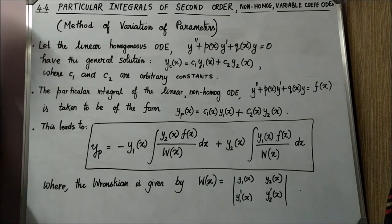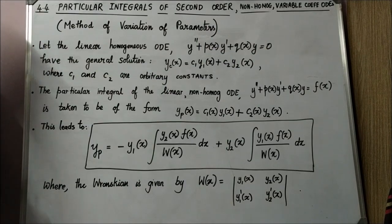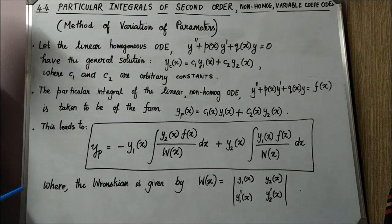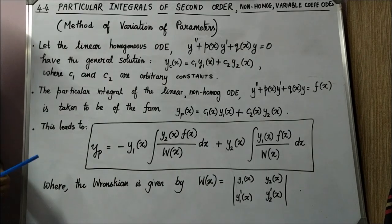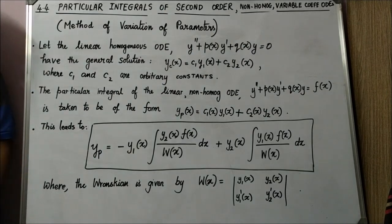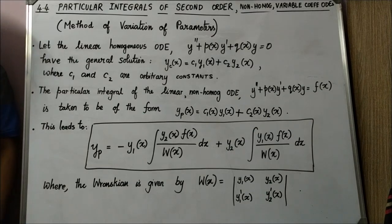Variation of parameters is not generally suggested in exams unless required — for example, when the equation is variable coefficient, such as a non-homogeneous Cauchy-Euler equation. If it is constant coefficient, use undetermined coefficients or the shortcut method instead. With this, we complete ordinary differential equations; we still have partial differential equations ahead. Thank you.